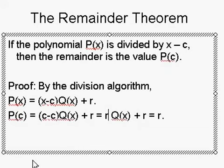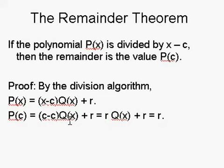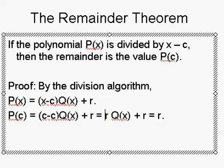If you plug in, you'll get 0 times Q(x) plus r equals r. So if you plug in c, you get r, you get the remainder.